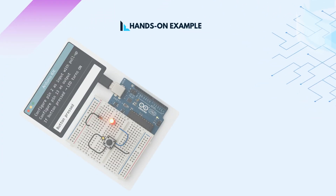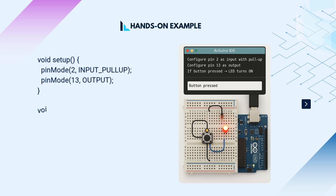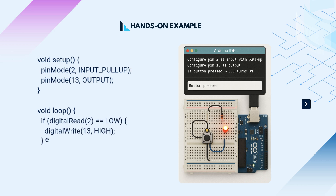Let's build a basic example — controlling an LED with a push button. We'll use GPIO pin 2 as input and pin 13 as output. Steps: configure pin 2 as input with pull-up, configure pin 13 as output. If the button is pressed, then the LED turns on.